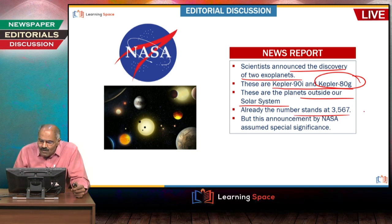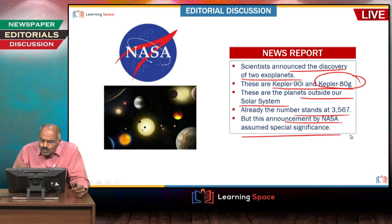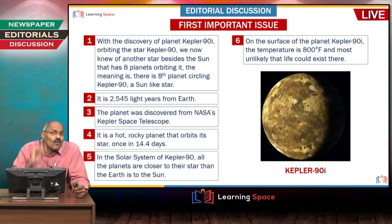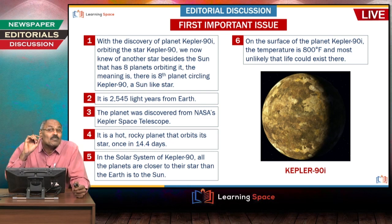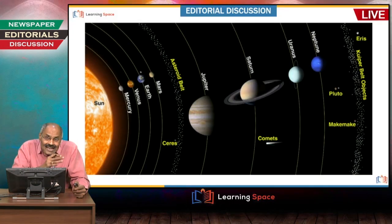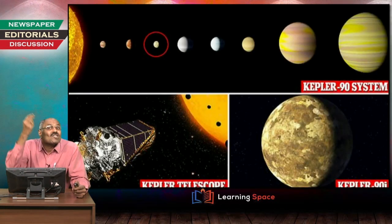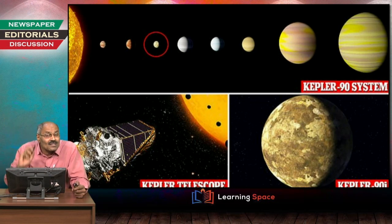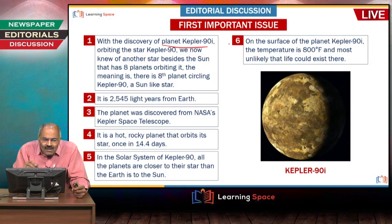A number of exoplanets outside the solar system are being found, but this NASA announcement assumed special significance for two reasons. First, the star Kepler-90 was found to have eight planets, just like our sun. Sun is also a star with eight planets, and similarly this other star was found with eight planets — that is one significance of the discovery of Kepler-90i orbiting the star Kepler-90.